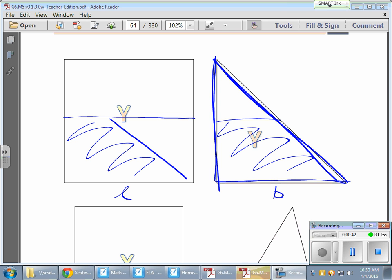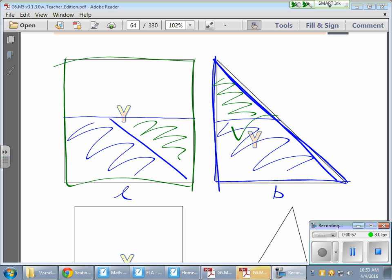And then this piece here, let me use a different color, would be turned over and fit right in here, thus proving that half of the rectangle is indeed the area of the triangle that shares the same base and height. So the height would be here, which is the width of the rectangle and half of it.